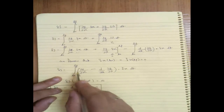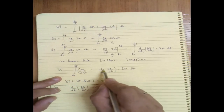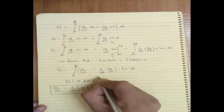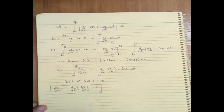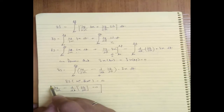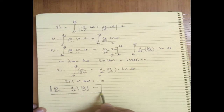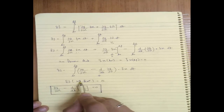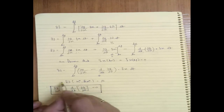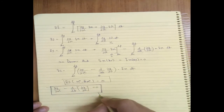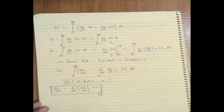Therefore, δJ = integral from T0 to Tf of [(∂G/∂X) − (d/dt)(∂G/∂X-dot)] · δX dT. The expression inside the integral is the Euler-Lagrange equation. Setting δJ = 0 for the optimal state X* gives the Euler-Lagrange equation: (∂G/∂X) − (d/dt)(∂G/∂X-dot) = 0. This is an important equation to note down.